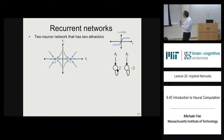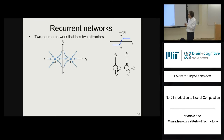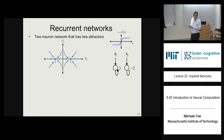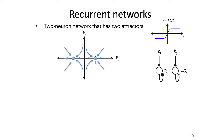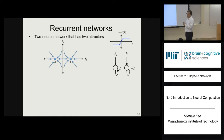No matter where you start this network, it evolves toward one of these stable fixed points — unless it starts exactly at 0, which is an unstable fixed point. The network will converge to one of the two attractors from almost any initial condition. This is why they're called attractors: they attract the state of the system toward one of those points.